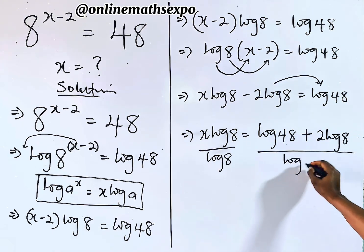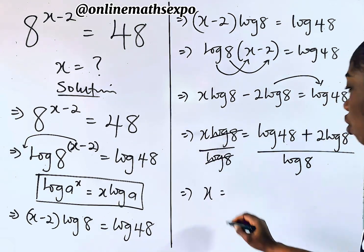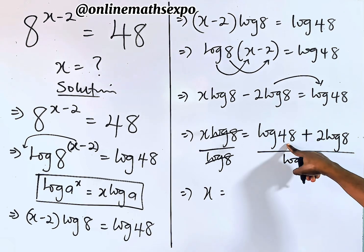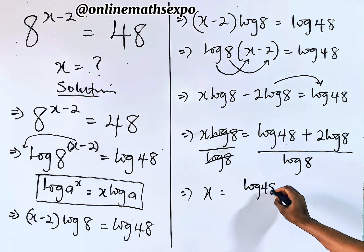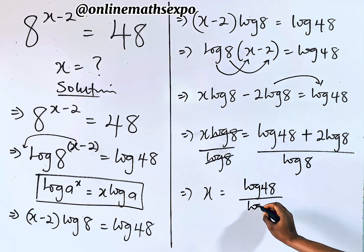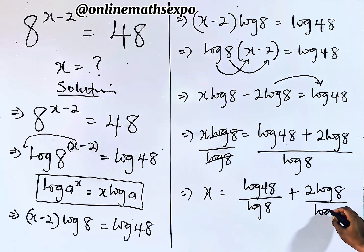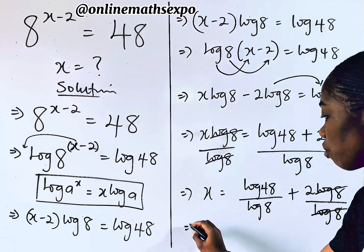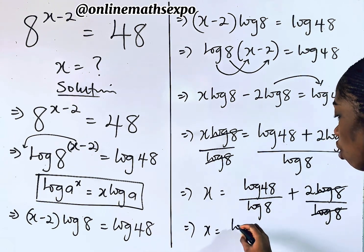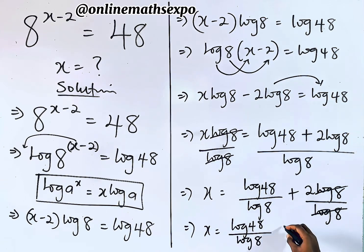Dividing both sides by log(8) cancels it on the left. So x equals log(48) divided by log(8) plus 2·log(8) divided by log(8). These last two log(8) terms are the same, so they cancel, giving us x equals log(48) divided by log(8) plus 2.